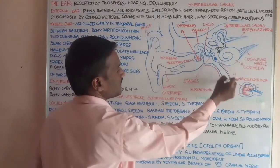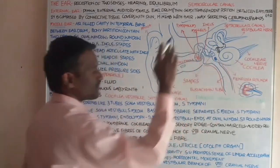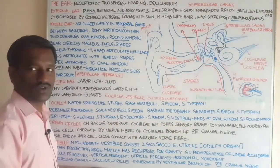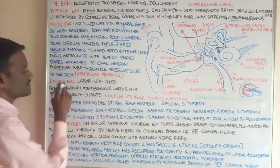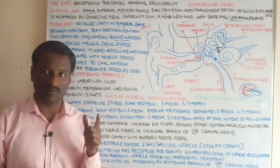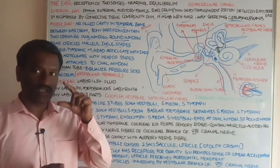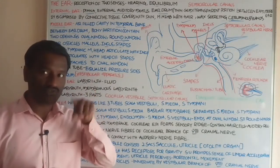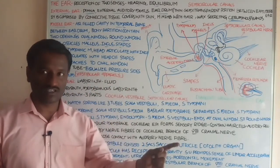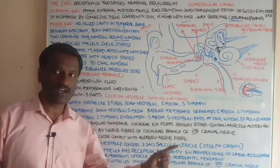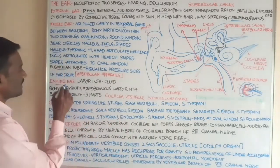The Eustachian tube is a tube-like arrangement that connects the middle ear to the pharynx. It helps to equalize the pressures on either side of the eardrum.